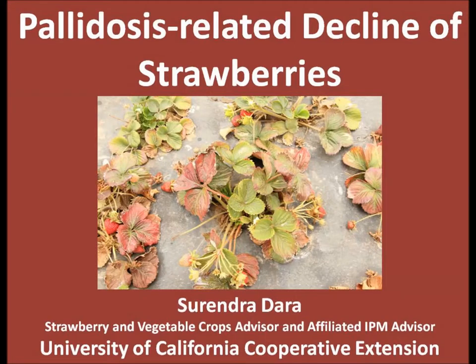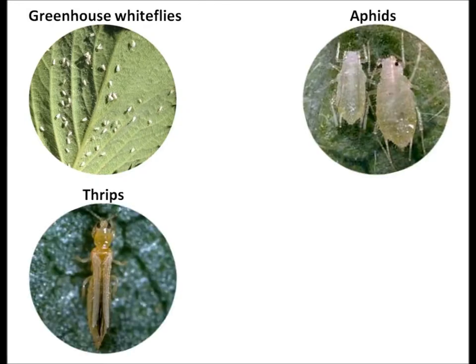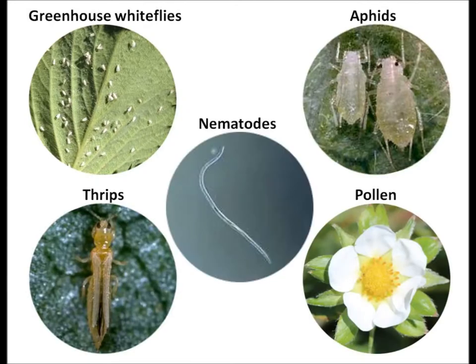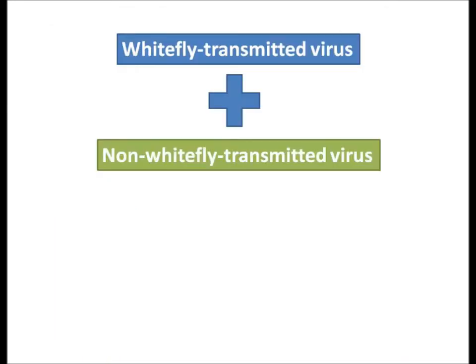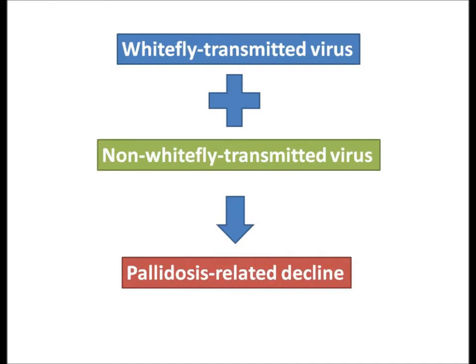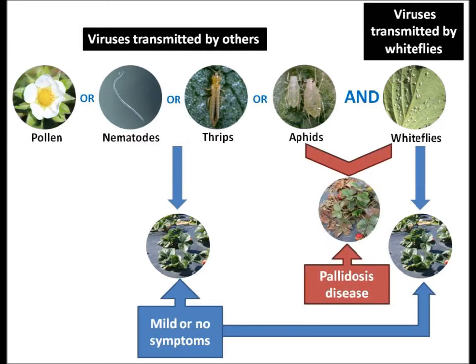Pallidosis disease, or pallidosis-related decline of strawberries, is a disease vectored by a complex of viruses transmitted by whiteflies, aphids, thrips, pollen, seeds, nematodes, and other sources. Disease occurs only when one of the whitefly-transmitted viruses is present in the plant along with one of the other viruses, meaning disease does not appear when only a single virus type is present — it requires both kinds to be present simultaneously.